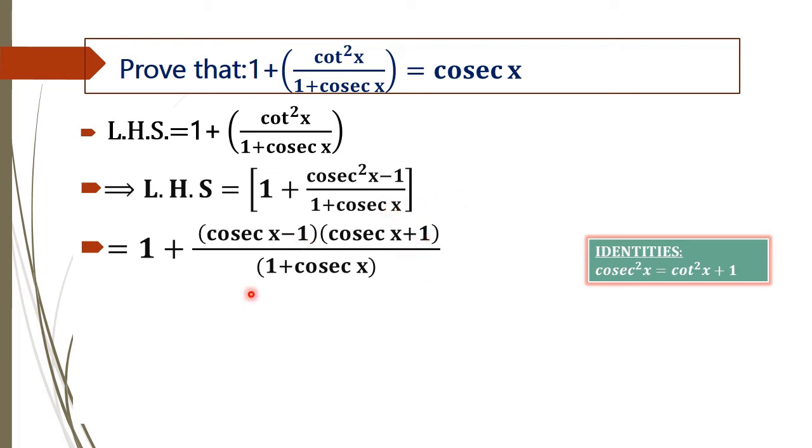Cosec x plus 1 is common in the numerator and denominator. We can cancel them with each other, and we will get 1 plus cosec x minus 1.